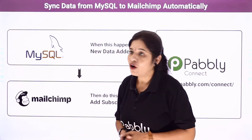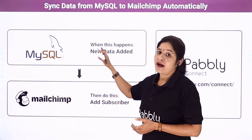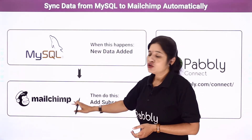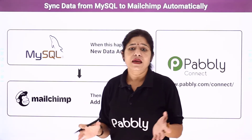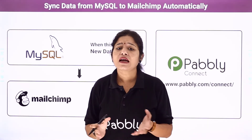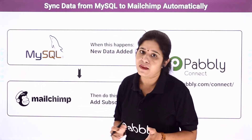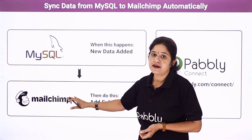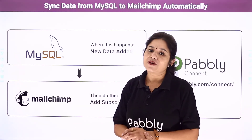In this particular automation, we are adding the details from MySQL into the MailChimp account. But not only MailChimp — you can use MailerLite, MailerCloud, Sendinblue, or any other email marketing platform. You can add the customer details in any email marketing platform. So let us learn the integration process now on my screen.